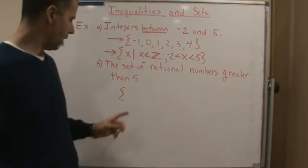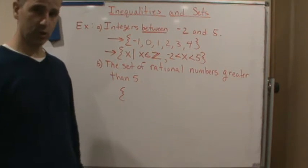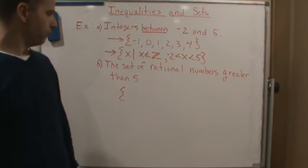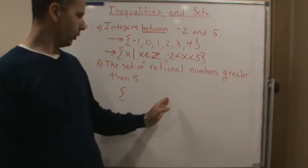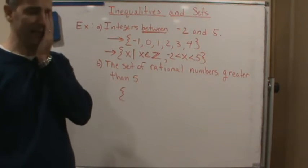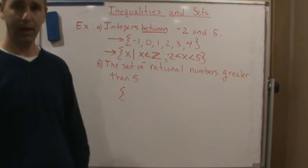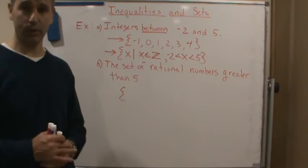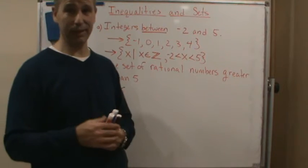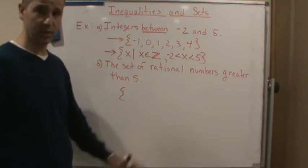Because I would have to somehow write out the rational numbers, or at least get a pattern going where I could use the ellipsis, and that's really going to be tedious. So in this case I wouldn't even bother with the roster method because it's difficult to do. Just go straight to the set builder notation.